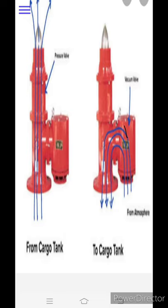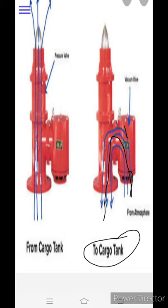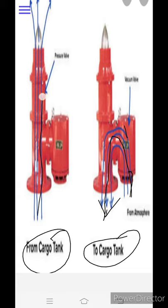This is a simple block diagram showing how it works. When the pressure of a cargo tank becomes very low, the vacuum side lifts up and air from outside is drawn into the tank. When there is excessive pressure in the cargo tank, it comes out through this line, the valve lifts up, and the excess pressure is released from the tank.